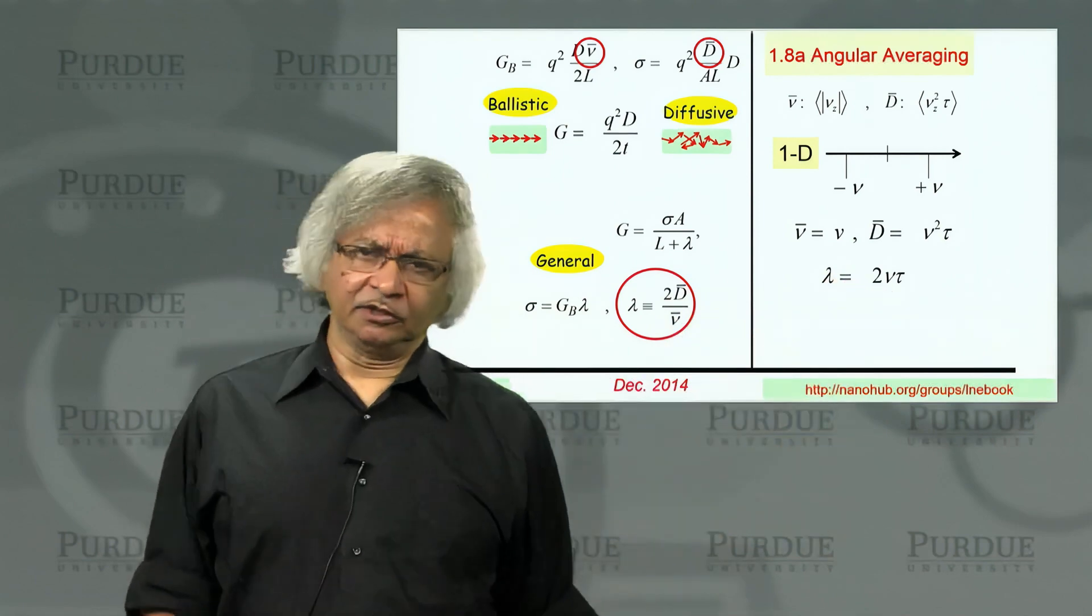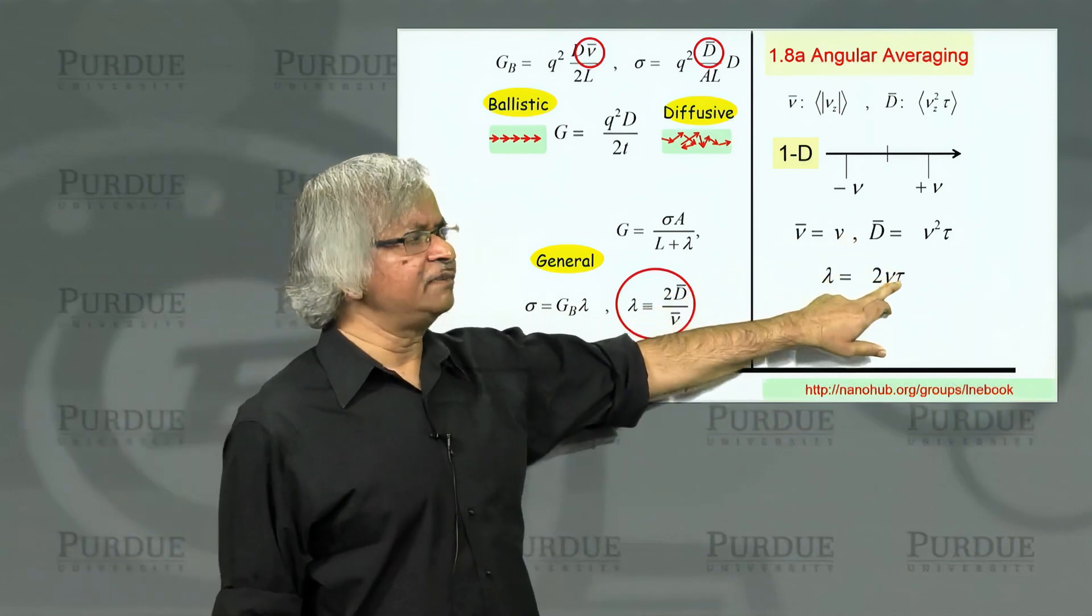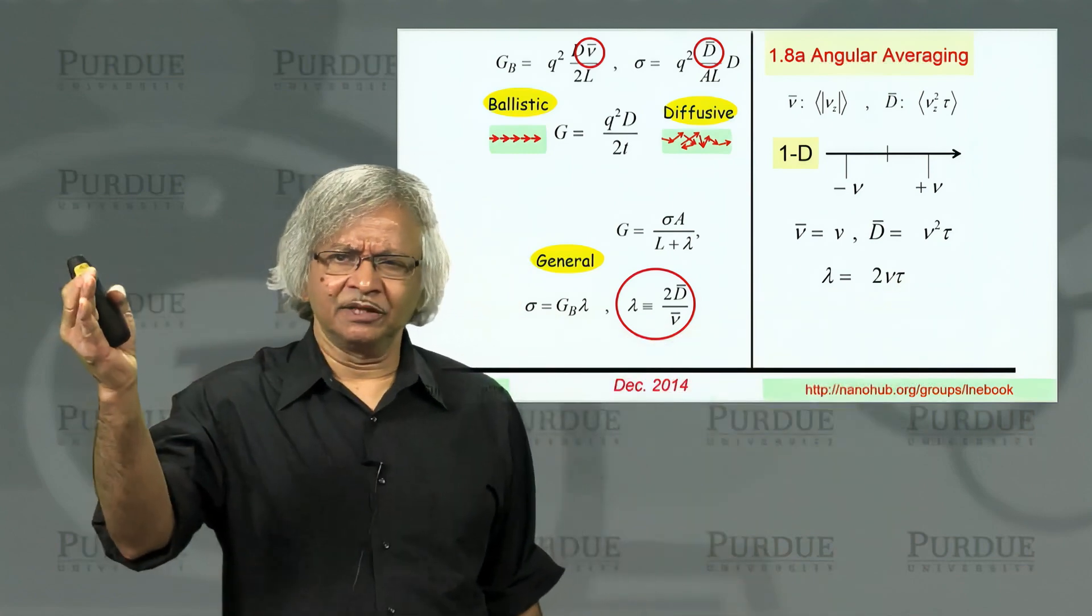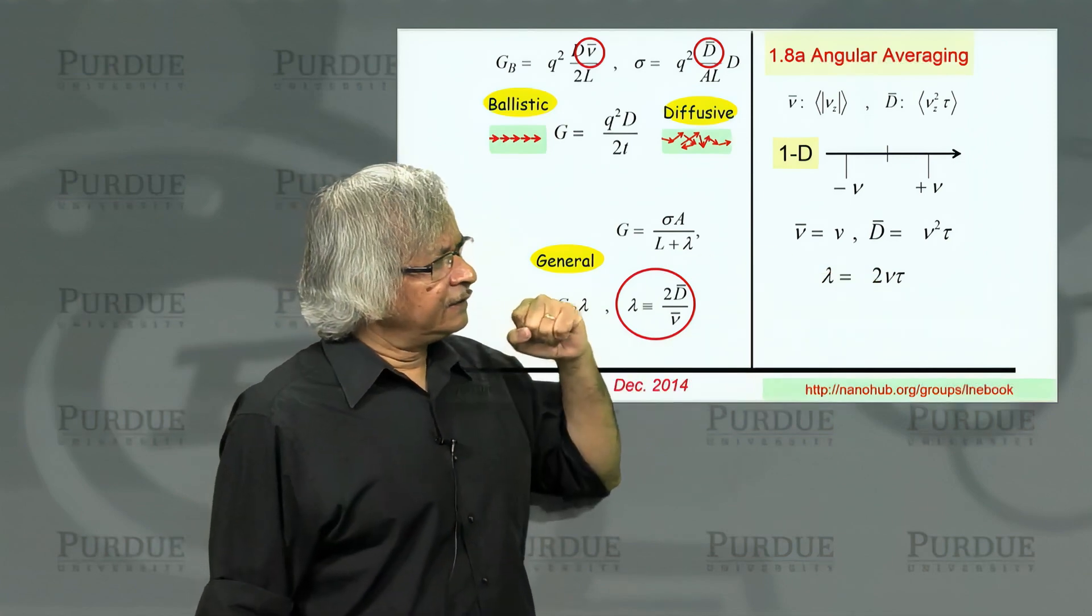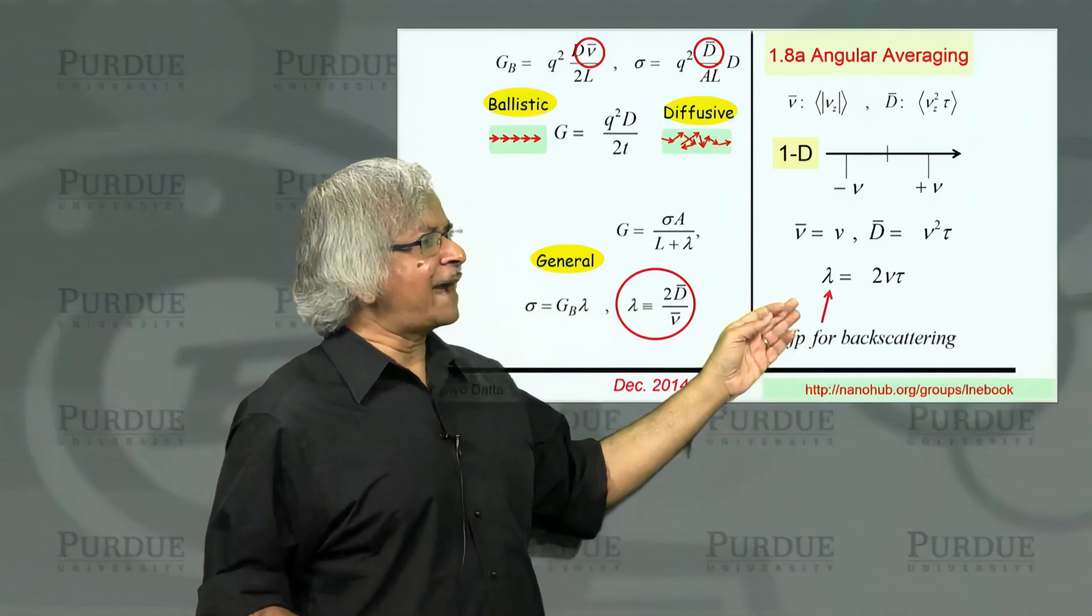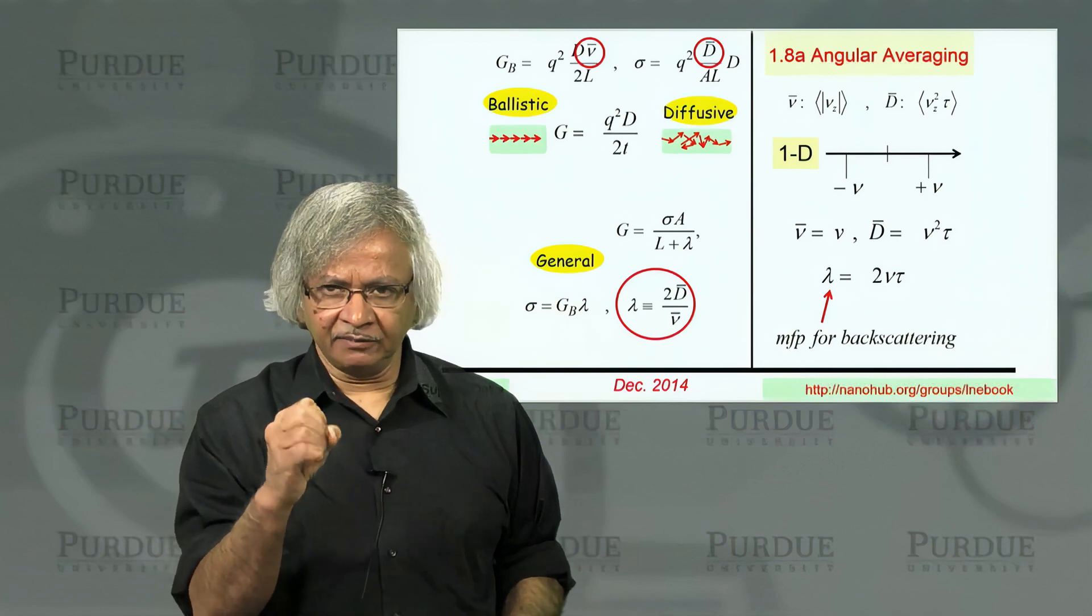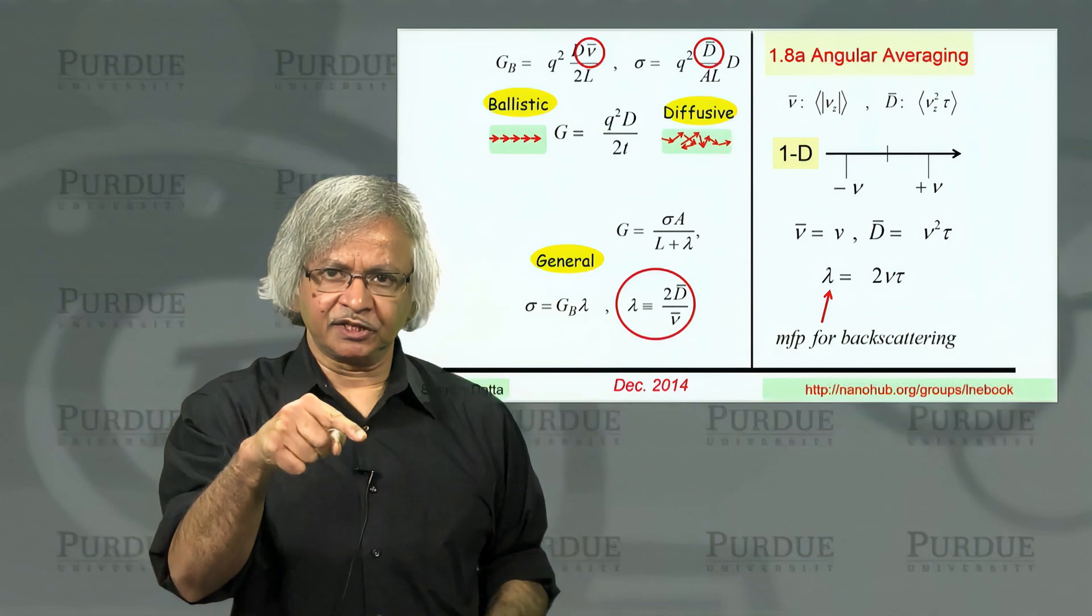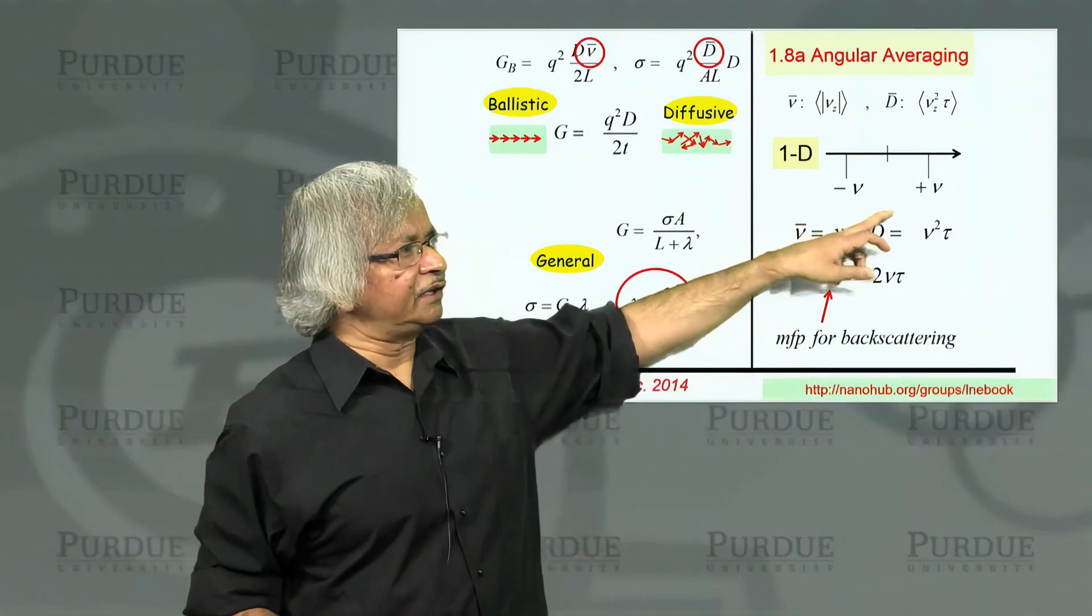Now, the two might puzzle you a little bit, because thinking about it, this v is the velocity. Tau is the mean free time. So you say, well, velocity times mean free time, that should be the mean free path. Now, why a 2 in here? And the thing is that this is the mean free path for backscattering. So the way it is is, here's an electron going along, and every time it hits something, it turns, changes its direction a little bit.